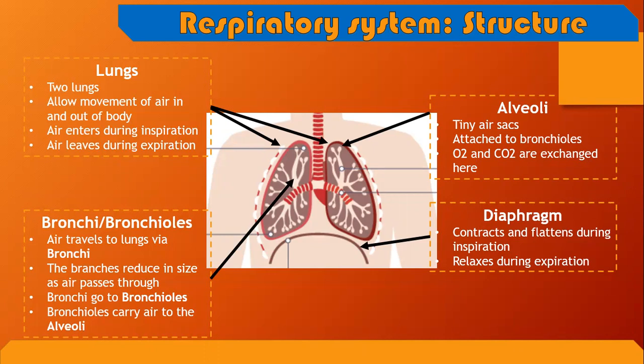The bronchioles then carry the air to the alveoli. The alveoli are the little sacs that are on the outermost branches of the bronchioles. It is in the alveoli that gaseous exchange takes place. The diaphragm, which you can see at the bottom, is the muscle that sits under the two lung sacs. As we breathe in, it contracts and flattens, allowing more space in the chest so the lungs can expand to pull in air.